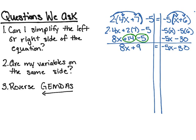My equation now reads 8x + 9 = -5x - 30. I have completely simplified both sides of my equation. The next step is to ask: are my variables on the same side? The answer is no — I have 8x on my left side and negative 5x on my right side. So what I need to do now is reverse GEMDAS.